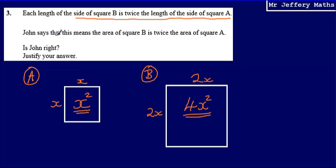So when John says that this means the area of square B is twice the area of square A, we're going to say: Is John right? No. And we're going to say that the area of B is 4 times, because it's 4 lots of X squared, so it's 4 times the area of A.